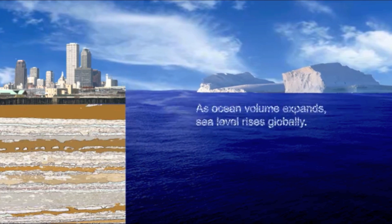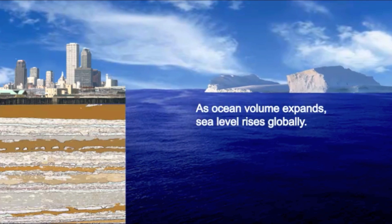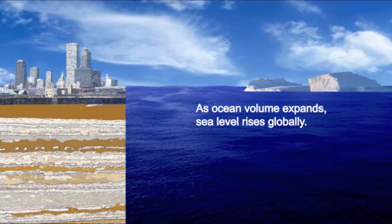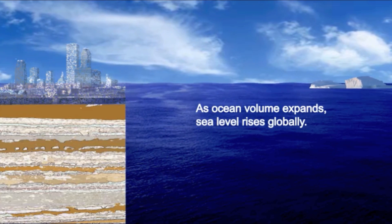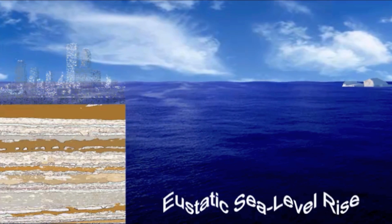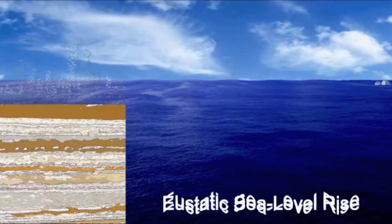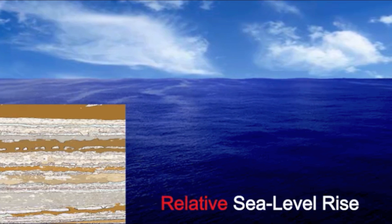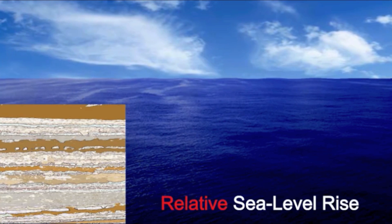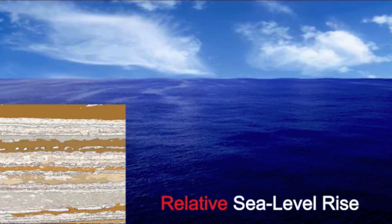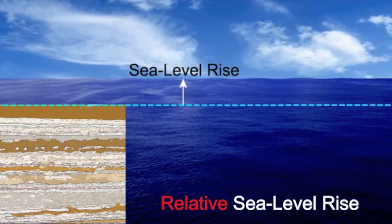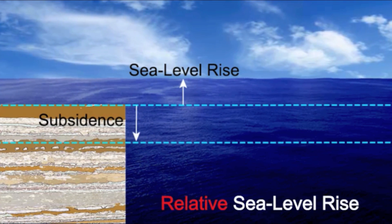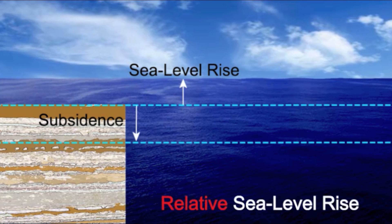As ocean volume expands, sea level rises globally. This is known as eustatic sea level rise. Relative sea level rise is the combination of eustatic rise in sea level and land movement, and is unique for each location.